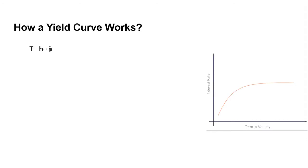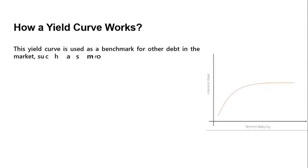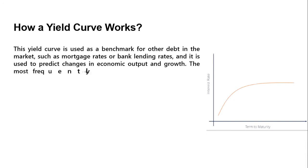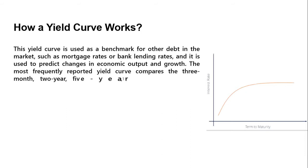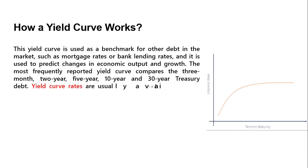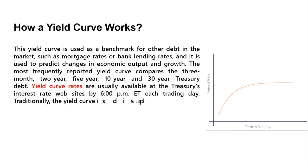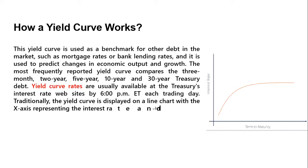The yield curve is used as a benchmark for other debt in the market, such as mortgage rates or bank lending rates, and it is used to predict changes in economic output and growth. The most frequently reported yield curve compares three to thirty year period treasury debt. Yield curve rates are usually available at the Treasury's interest rate website by 6 PM each trading day. Traditionally, the yield curve is displayed on a line chart with the x-axis representing the interest rate and the y-axis representing the maturity date.